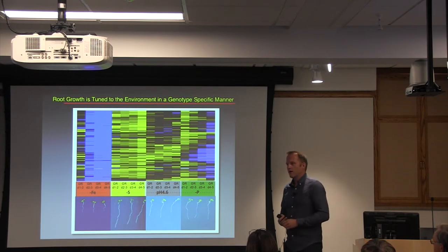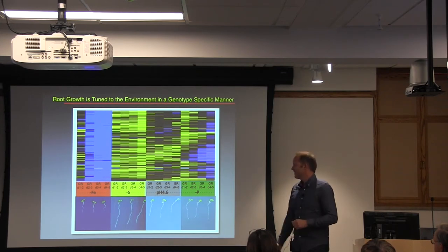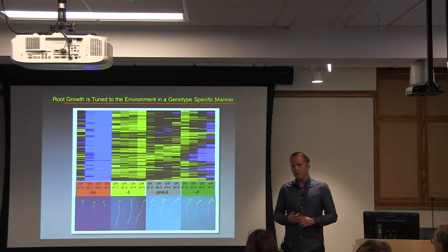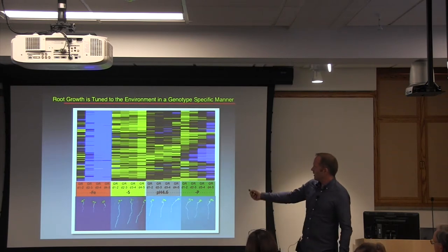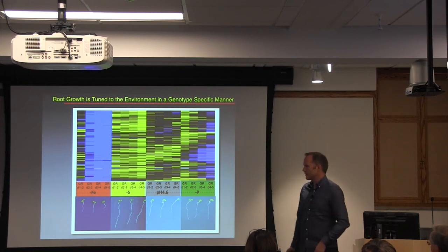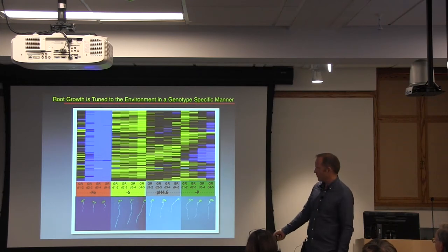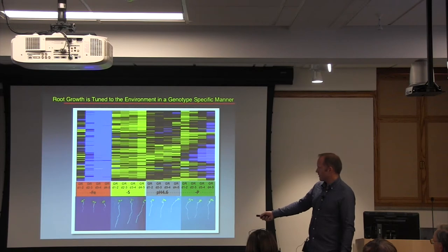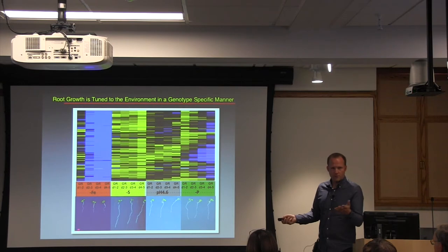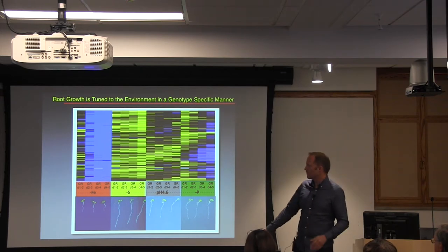Today I'm going to talk about two projects — well, two and a half — that illustrate nicely what we can do using natural variation. This all got started with an experiment where we used around 250 accessions and exposed them to different conditions, growing them on agar plates. I showed three replicates for each condition, and as you can see, in different conditions when we drop out different nutrients, we actually get a very different response. So we did this for each of those roughly 250 accessions.